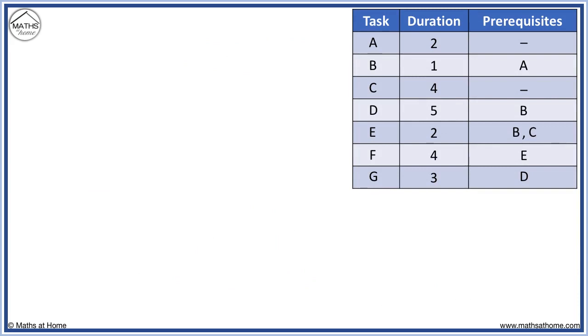Here is another prerequisite table. We start with the tasks that have no prerequisites. Tasks A and C. Next, task B requires task A so we draw B coming out of A.